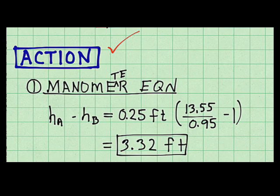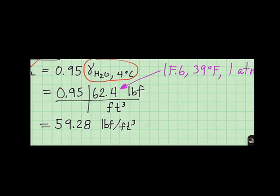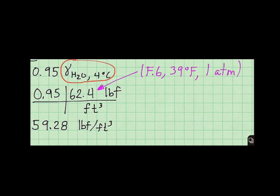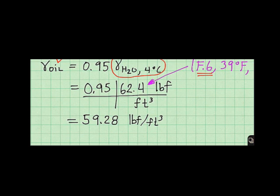Next, I execute my plan. So I calculate the difference in piezometric head, and the result is 3.32 feet. Then I calculate the specific weight of oil. I need to look up the specific weight of water at its reference temperature. To do this, I go to table F6. And the value I get is right here. And here's the final value of the specific weight of oil.